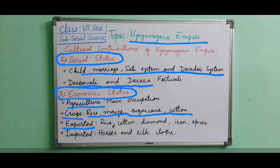In return, they were importing horses and silk from other countries. Import means when we are taking from others, and export means when we are giving to them. Vijayanagara was an international business center for diamonds — at that time, diamonds were available in very large numbers.